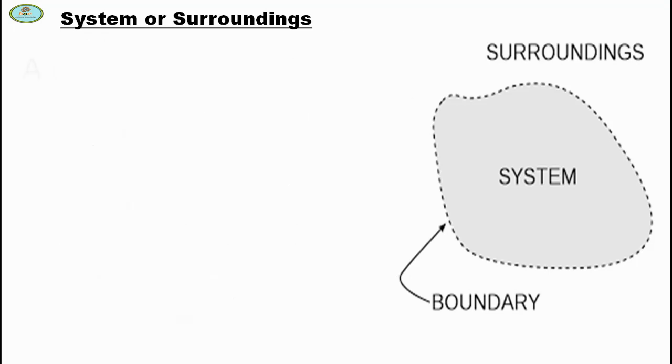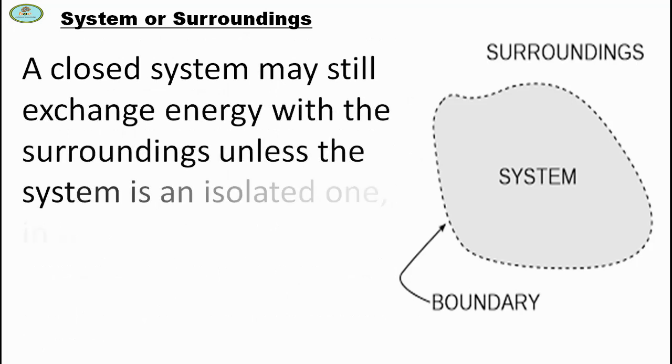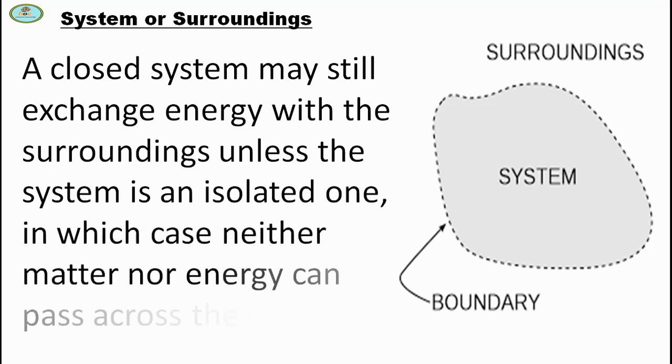A system may still exchange energy with the surroundings unless the system is an isolated one, in which case neither matter nor energy can pass across the boundary.